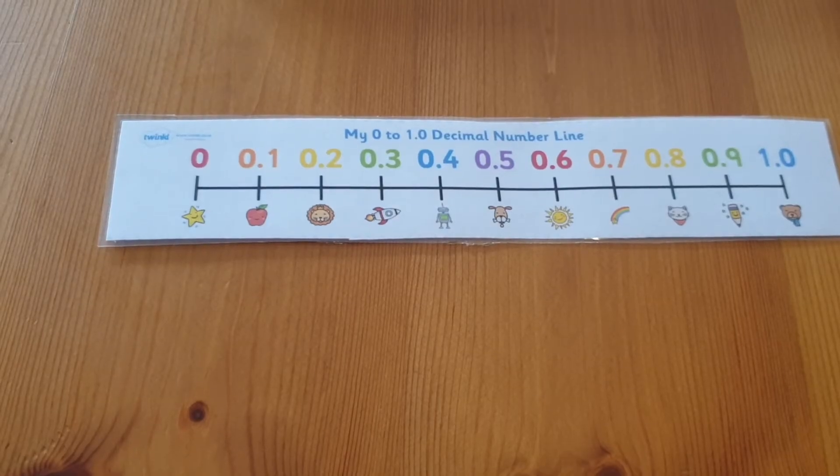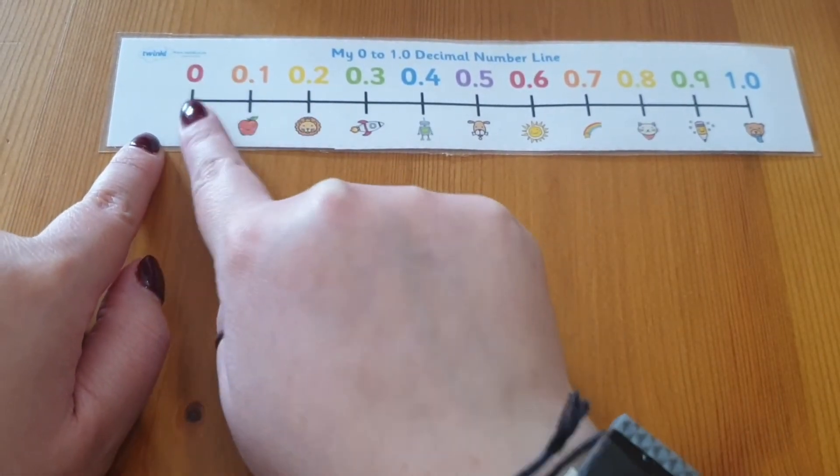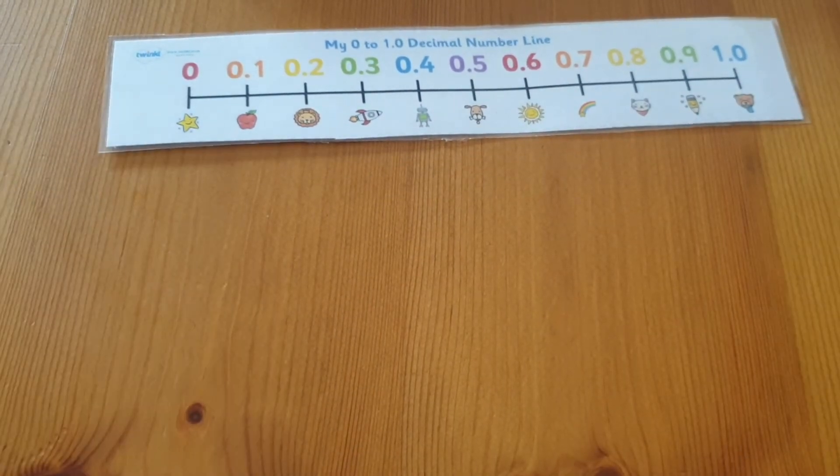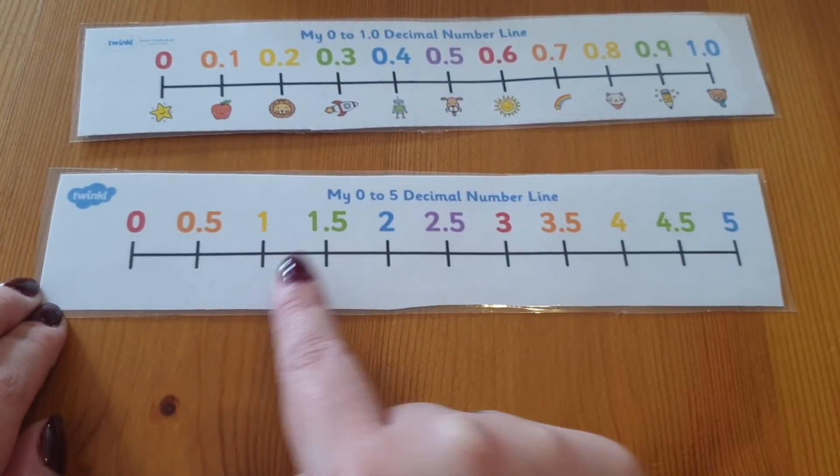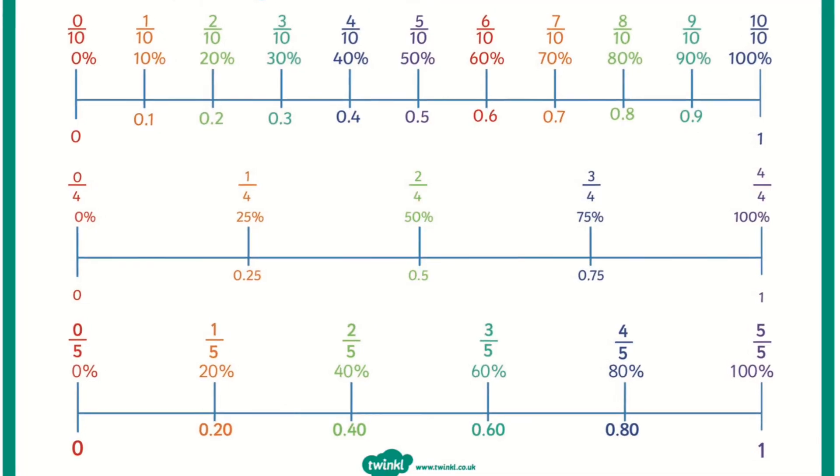Decimal number lines can be used from 0 to 1 working in tenths, from 0 to 5 working in halves. Also you could introduce hundredths,